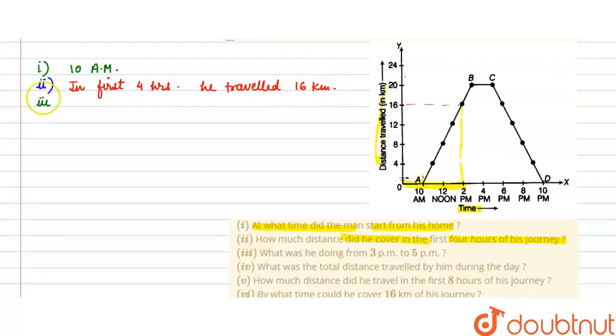Now, third part of the question. In the third part, it is asking what was he doing from 3 PM to 5 PM. 3 to 5 means this part. Between 3 to 5, this will come in between. You can see, this is 3 and this is 5.